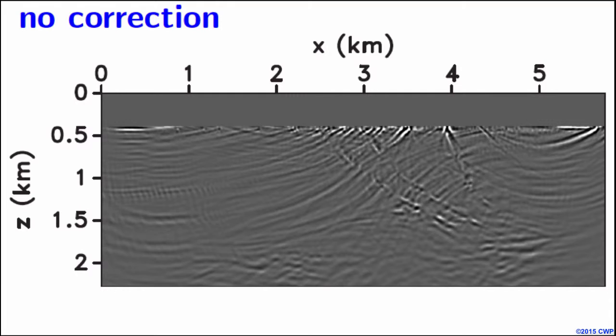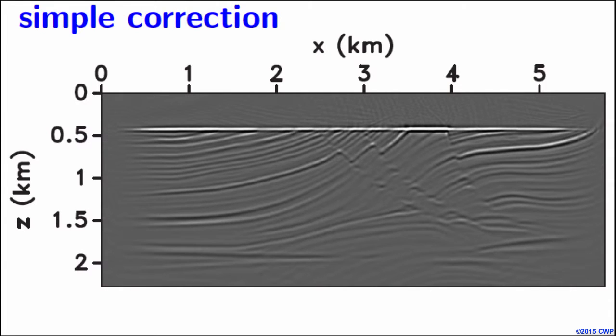There has been a lot of research focusing on polarity reversal correction. One of the simplest and computationally efficient ways is to flip the sign of the individual image from each experiment at negative source and receiver offset in the image domain. After stacking images, we can get a much better image where we can see most of the reflections.